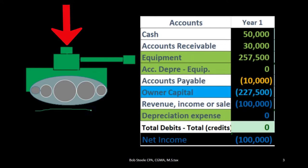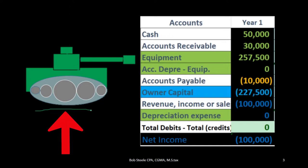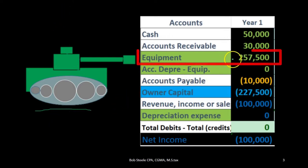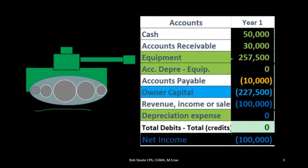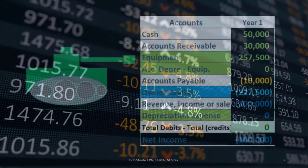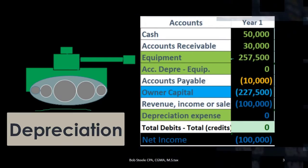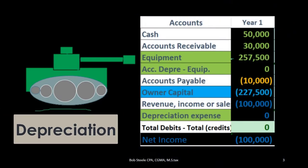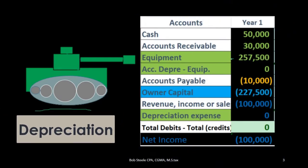Let's take a look at an example. We have our property, plant, and equipment being a tank. We're going to use that tank in some way to help us generate revenue in the future, which is why it's a fixed asset — property, plant, and equipment. We're going to put it on the books at $257,500. When we reduce the value of that equipment as we use it, we call that depreciation.